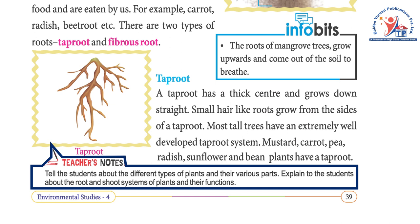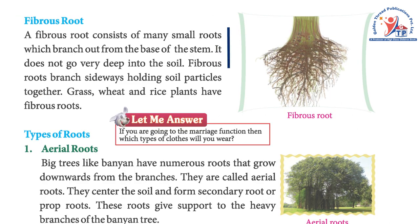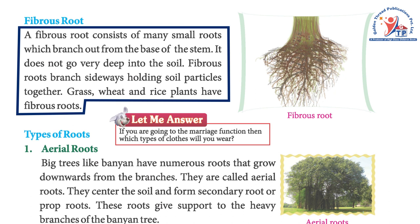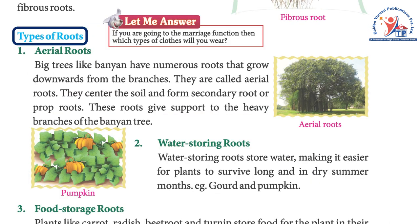A fibrous root consists of many small roots which branch out from the base of the stem. It does not go very deep into the soil. Fibrous roots branch sideways, holding soil particles together. Grass, wheat, and rice plants have fibrous roots.